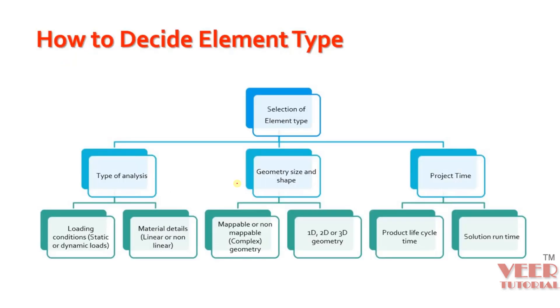Now let's understand how to decide the element type. In which condition, what type of element we have to use. The selection of element is based on 3 types: first is type of analysis, for different types of analysis a certain type of element is recommended; then geometry, shape and size; and project time.